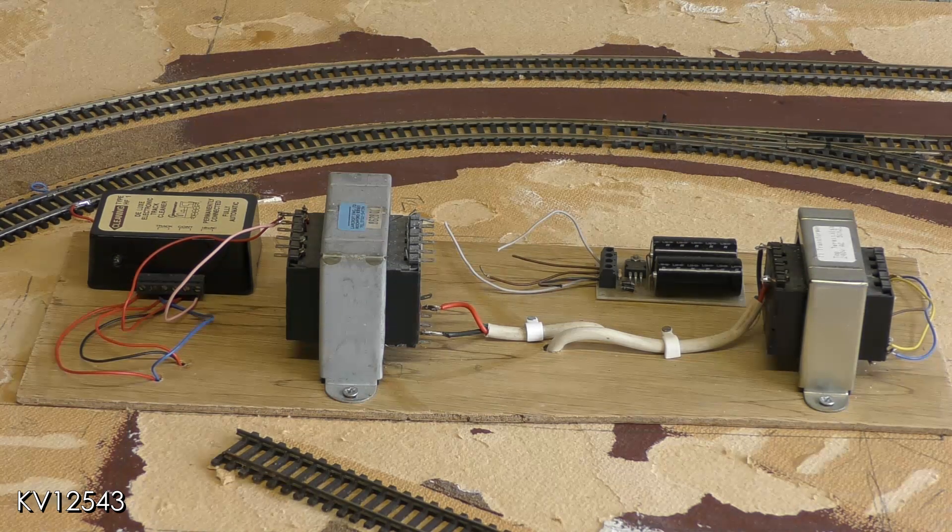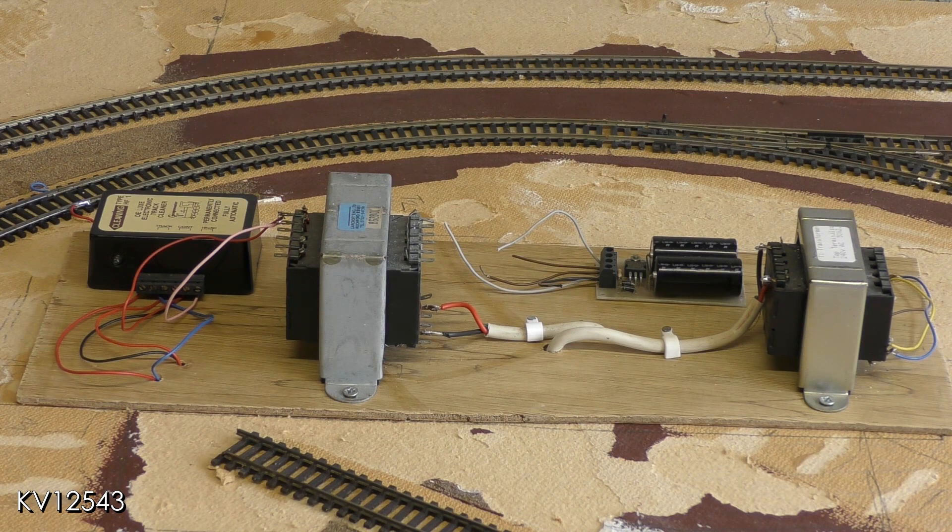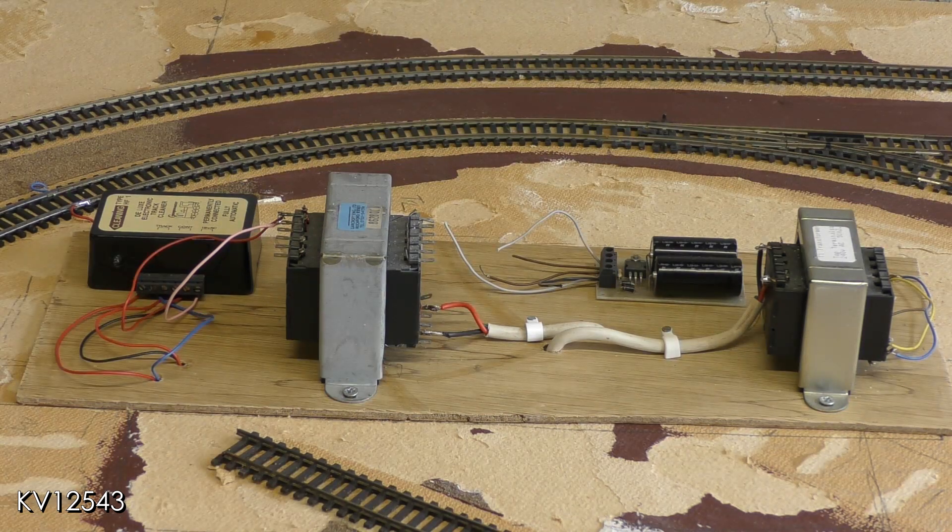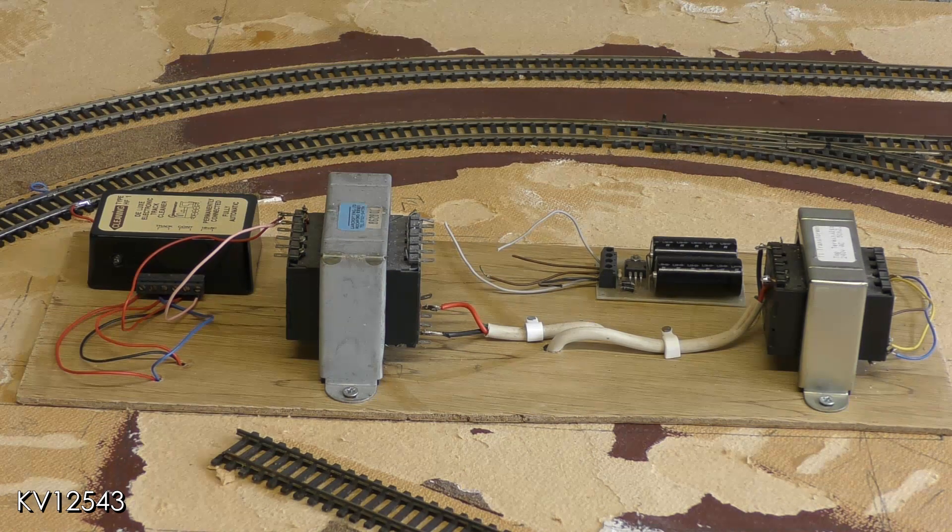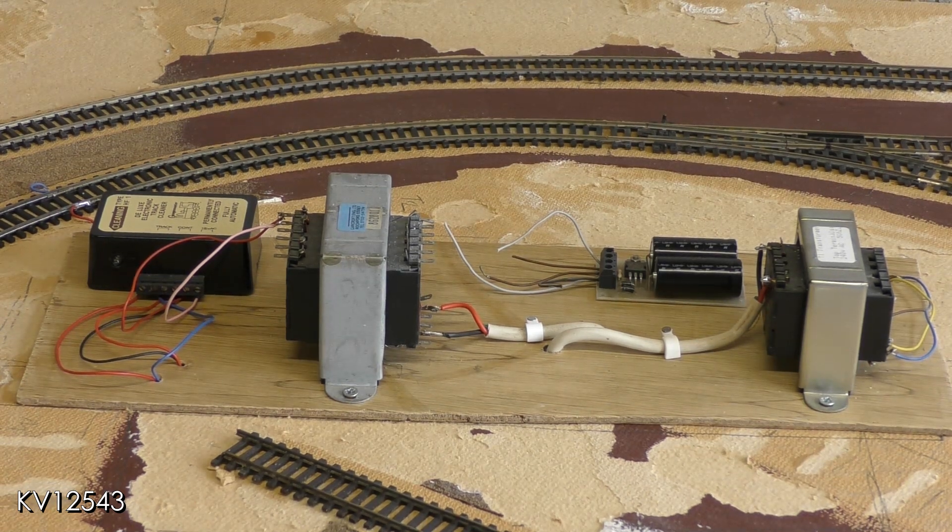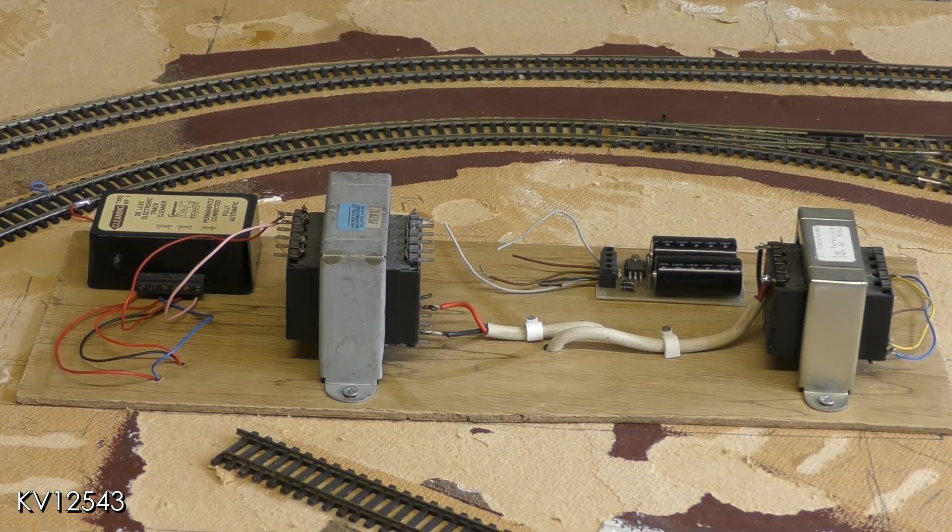Softboard does not take screws very well and as transformers are quite heavy objects, a piece of ply has been glued to the board to house all the electrical equipment. As the HF track cleaner is very light it has been attached using sticky fixer pads.